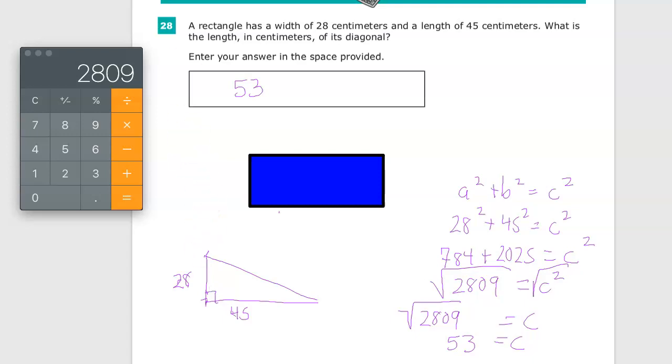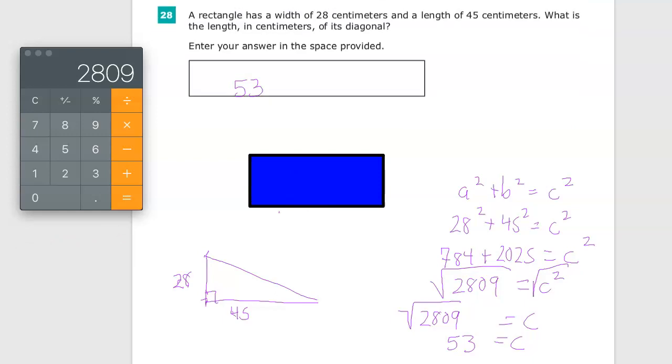Because the thing you do not want to do, no matter how low level your calculator is, is put 2,809 in there. Because that is not what you're looking for. You're looking for the value of C. So be careful. Not a super difficult question, but a really easy question to get wrong.